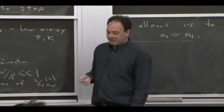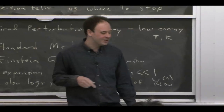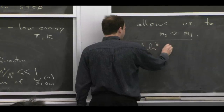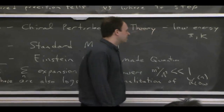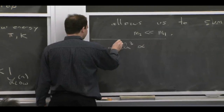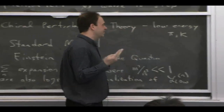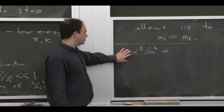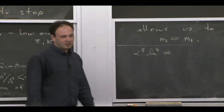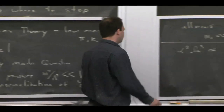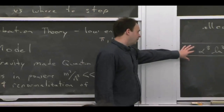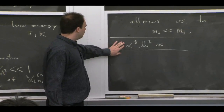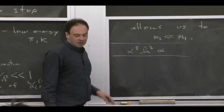When I was a postdoc, there was controversy about a term that was alpha to the eighth times log cubed alpha in hydrogen energy levels — eight powers of alpha, three powers of logs. There were four groups: two got one answer, two got another. Using the ideas of effective field theory, we were able to figure out which group was right very clearly, because you could connect these logarithms to an effective field theory. The whole consistency of that effective field theory connects this logarithm to other logarithms, building a picture for the physics that makes the answer totally clear.